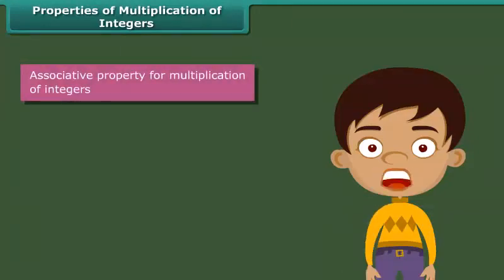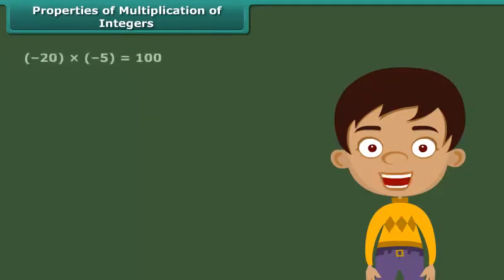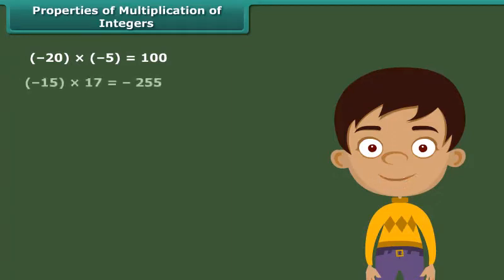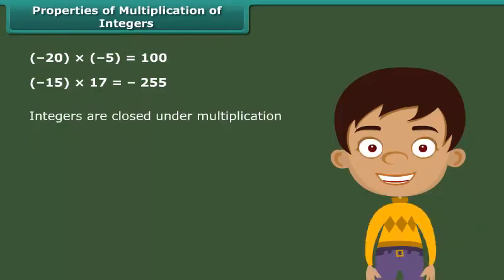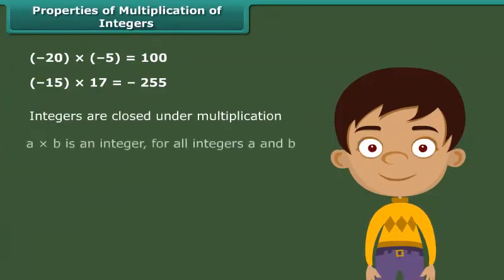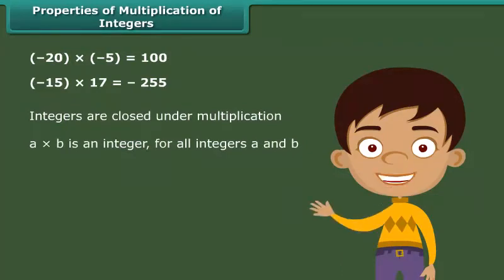The product of two integers is again an integer. For example, minus 20 into minus 5 is equal to 100. Minus 15 into 17 is equal to minus 255. So we can say that integers are closed under multiplication. In general, A into B is an integer for all integers A and B.